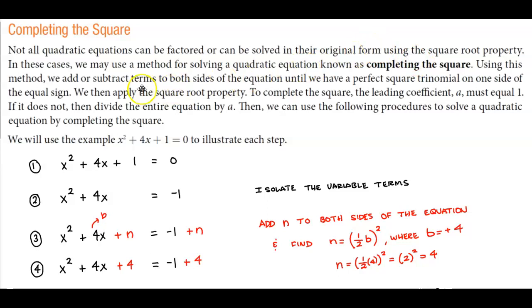Using this method, we add or subtract terms to both sides of the equation until we have a perfect square trinomial on one side of the equal sign. We then apply the square root property. To complete the square, the leading coefficient a must equal 1. If it does not, then divide the entire equation by a. Then we can use the following procedures to solve a quadratic equation by completing the square.